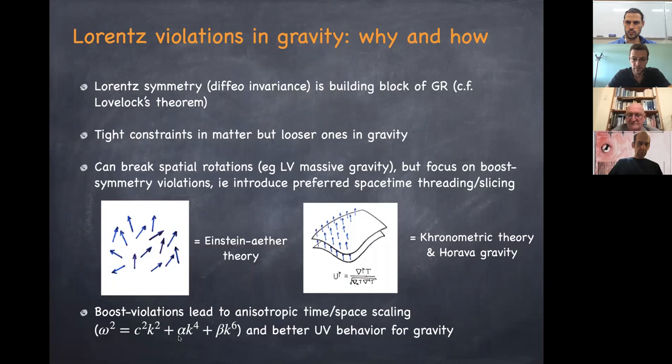Nevertheless, this anisotropic scaling of space and time leads to much better UV behavior for gravity. In fact it has been shown to lead, at the very least, to power-counting renormalizable gravitational interactions.